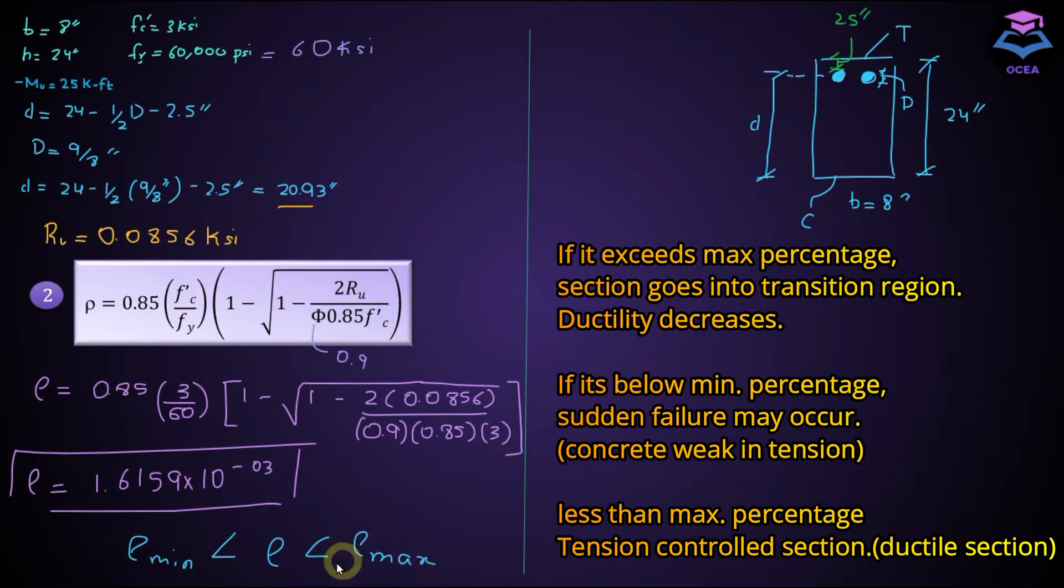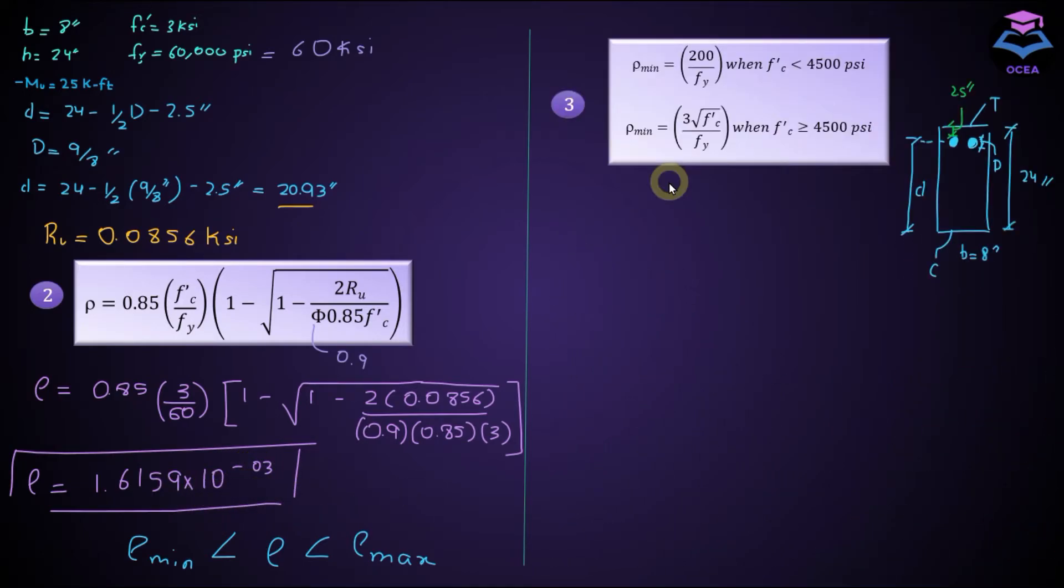If this is the case then we can proceed with our calculation using this value. And now we will calculate the minimum percent of steel from these equations. And since fc prime is equal to 3 ksi which is less than 4500 psi, we will use this equation here. So rho minimum is equal to 200 over Fy. And Fy here in this case would be equal to 60,000 psi. Remember that when you substitute Fy here it should be in psi units, and it's equal to 3.33 raised to the power minus 3.